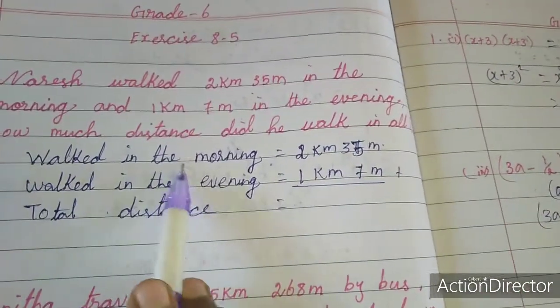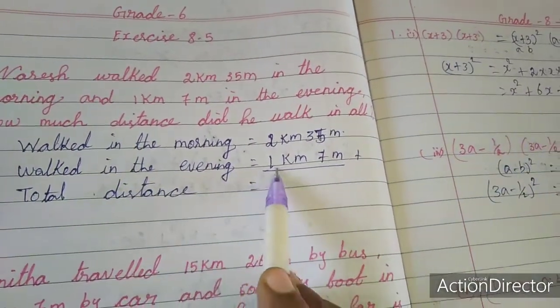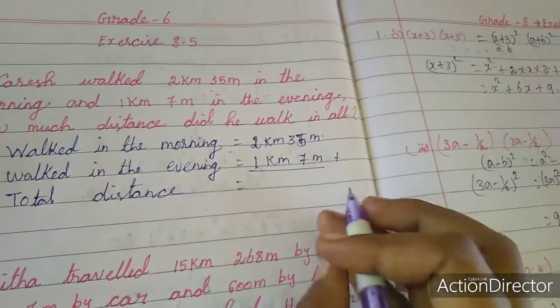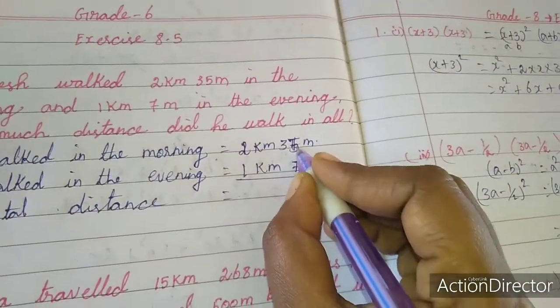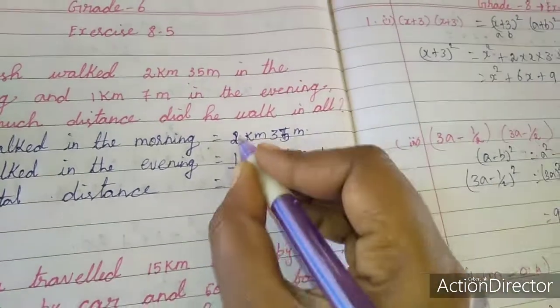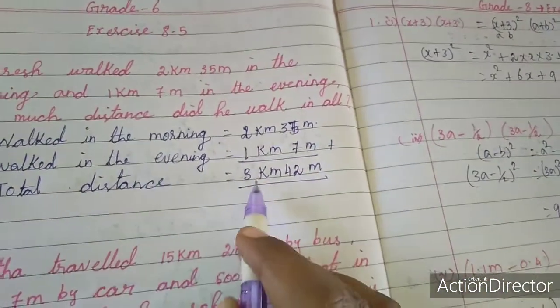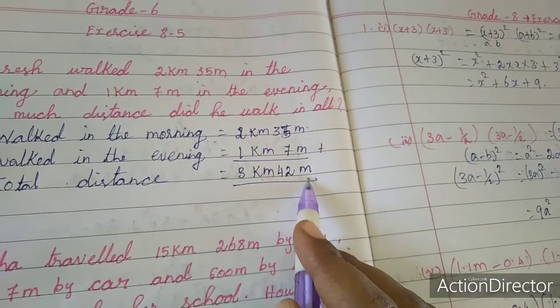Walked in the morning is 2 km 35 m, walked in the evening is 1 km 7 m, so total distance means we have to add this. See here 35 plus 7 is 42, so 42 m. 1 plus 2 is 3, 3 km. So he walked 3 km and 42 m daily.